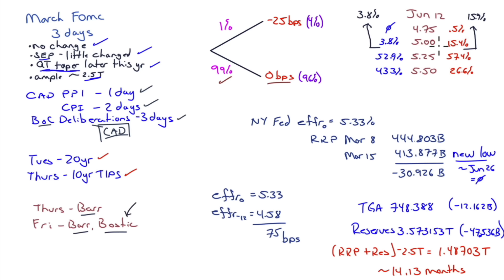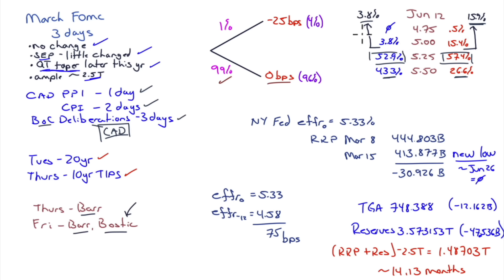Going out to June: last week two or more rate cuts was 16% — that's pretty much gone, now 3.8%. No rate cut by June moved from 26.6% to 43.3%. One rate cut by June: 52.9%, was 57.4% — pretty much unchanged, but most of the weight that was on the 5% and the 4.75% roughly 12% migrated upwards. Effective federal funds rate obviously still staying at 5.33%; next week will also sit at 5.33 — nothing is going to happen this week.